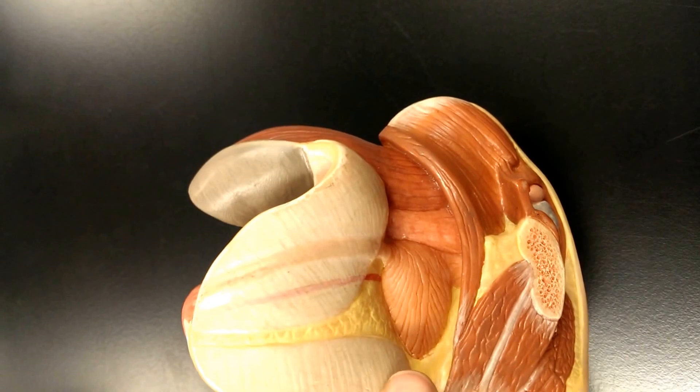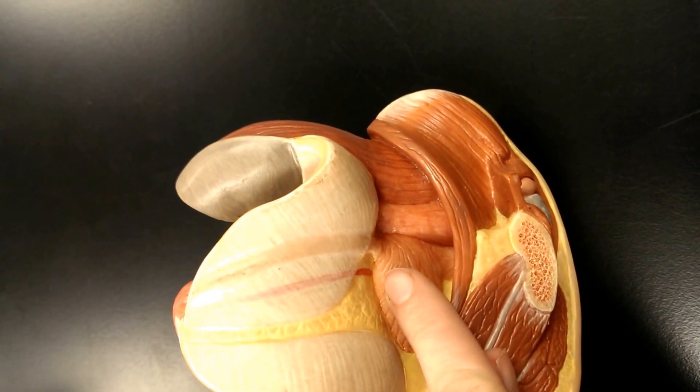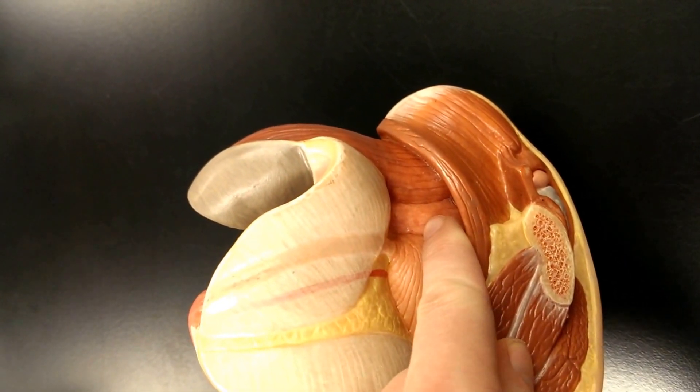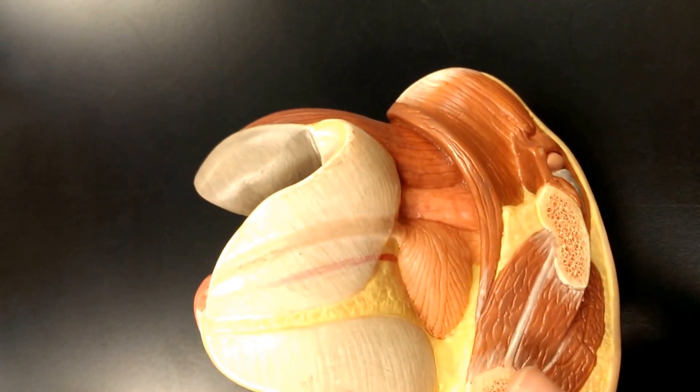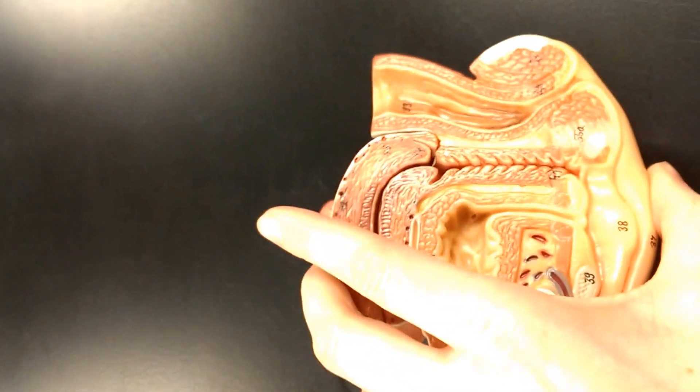From the side view, I see the bladder, behind it the vagina, and behind that, the rectum. If I open it up, I get this view.